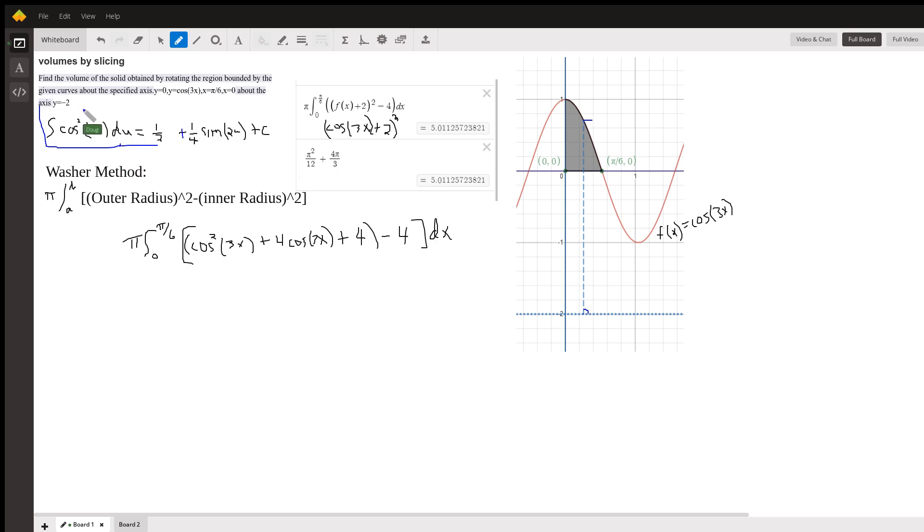And that's a separate video if you don't know how to do that. But you can look it up in your calculus book. And the washer method is pi times the definite integral from a to b, in our case 0 to pi over 6, of the outer radius squared minus the inner radius squared.